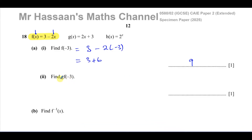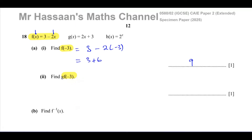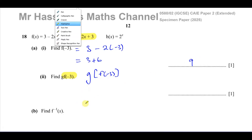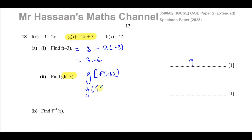Part (a)(ii) says find gf(-3). We already found f(-3) = 9. So what this is telling us is to take that value and put it inside function g. We look at function g and replace the x with 9. So we need to find g(9): instead of 2x it's 2 times 9 plus 3, which is 18 plus 3, which is 21.